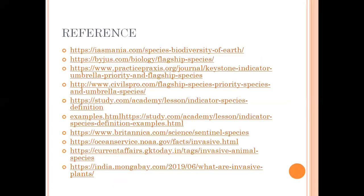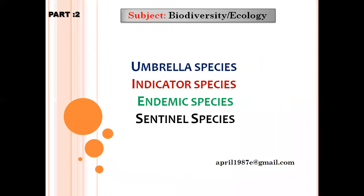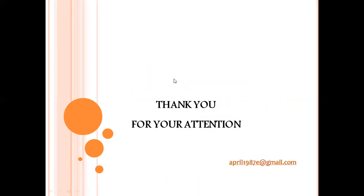So these are the topics for discussion today. In the next video, I'll be continuing on the different types of species. I'll be discussing the umbrella species, indicator species, endemic species, and the sentinel species. And with this, I'd like to say thank you. Thank you so much. I hope and believe you learned something from this video and gained some information about the different types of species. Thank you and God bless.